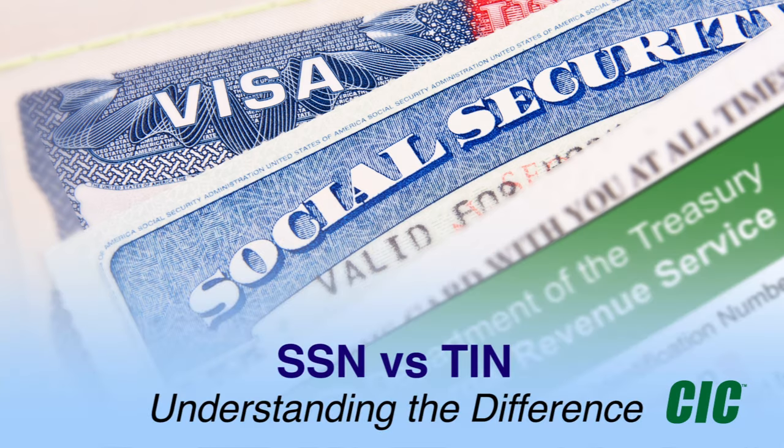Have you ever wondered what the difference is between a social security number and an individual taxpayer identification number? According to the IRS, a taxpayer identification number, also called a TIN, is only available for certain non-resident and resident aliens, their spouses, and dependents who cannot get a social security number.